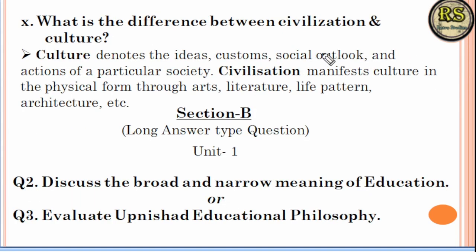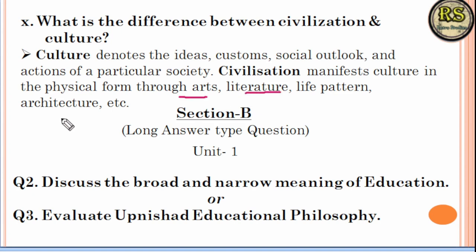The last question of Section A is: What is the difference between civilization and culture? Civilization can be understood in physical form — it includes art, literature, life patterns, and architecture.